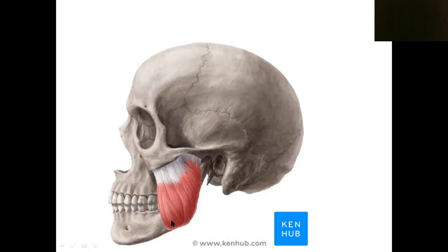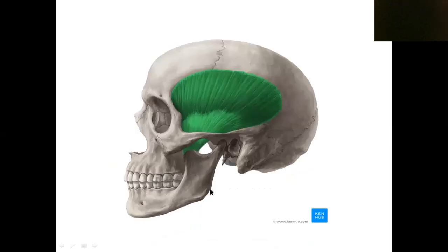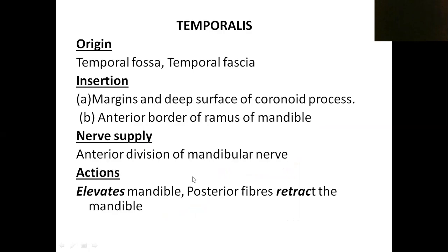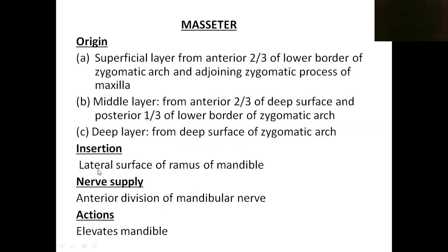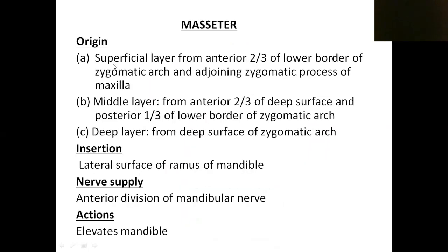These fibers come down and insert into the lateral surface of the ramus of the mandible. The ramus has a superior border, an inferior border, an outer surface, and a medial or inner surface. The masseter muscle is inserted into the outer or lateral surface of the ramus of the mandible. It is supplied by the anterior division of the mandibular nerve. The action is elevation of the mandible — when this muscle contracts, it moves the mandible upward.